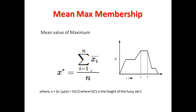We also have another method called mean of maxima, or MOM. It works similarly to the height method, but addresses its key limitation. In the height method, if more than one point shares the highest membership value, the method does not work. As shown in this diagram, when two points share the same highest value, we instead find the mean of those two peak points.